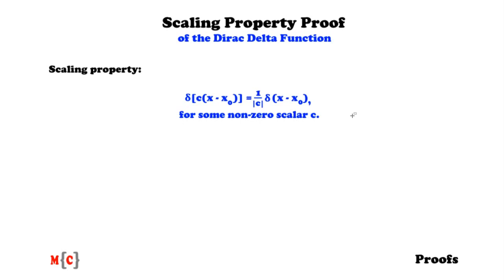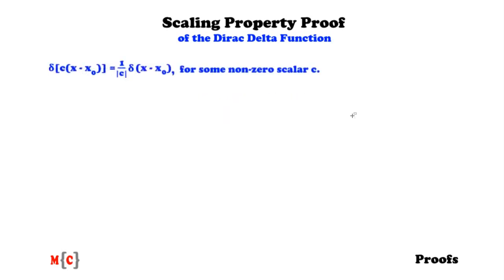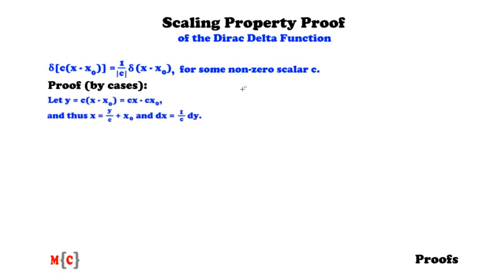To prove this scaling property, we will distinguish two cases: one where c is greater than zero, and one where c is less than zero. We will use integration to show the scaling property. For ease, let y be equal to c times x minus x-null, which equals c times x minus c times x-null. Rewriting this: x equals y over c plus x-null, and dx equals 1 over c times dy, since the derivative of x with respect to y is 1 over c.